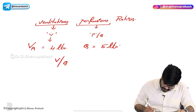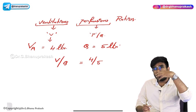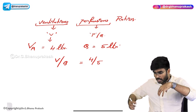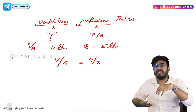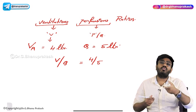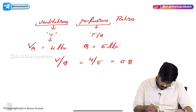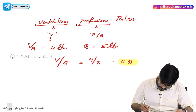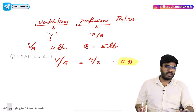So V by Q — the ventilation-perfusion ratio — is 4 by 5. We are putting 4 liters of air into the alveolus and sending 5 liters of blood for oxygenation, so 4 divided by 5 is 0.8. The ventilation-perfusion ratio in a healthy individual is 0.8, but this is not the same in all regions of the lung.